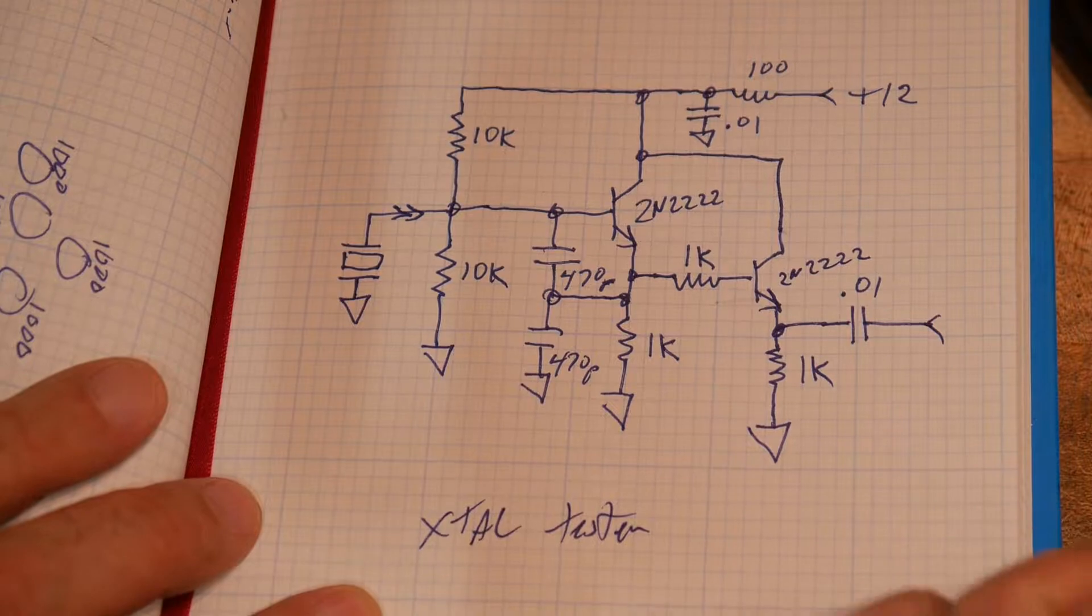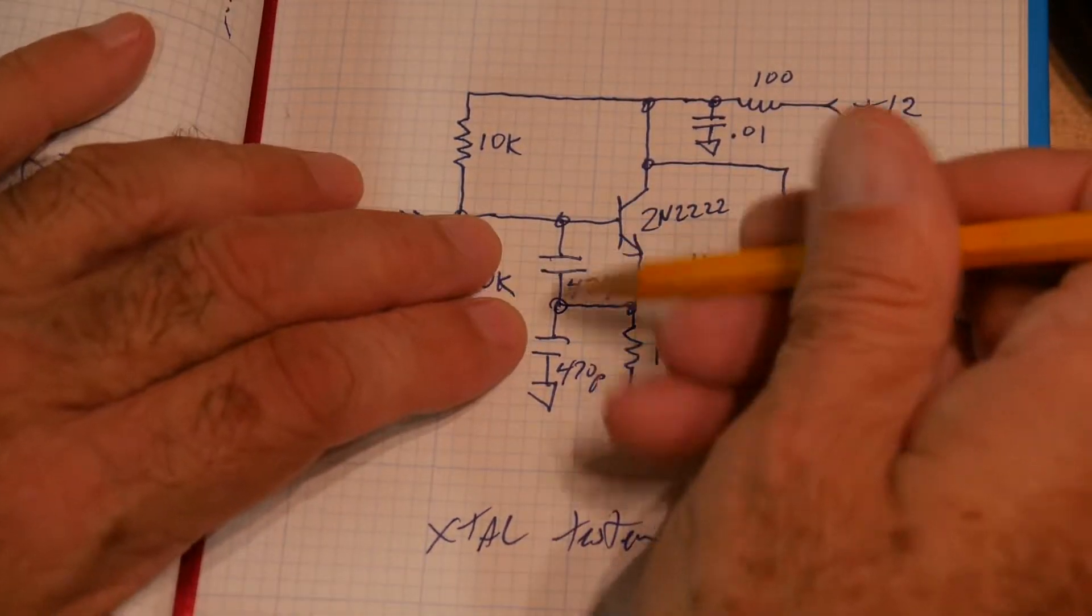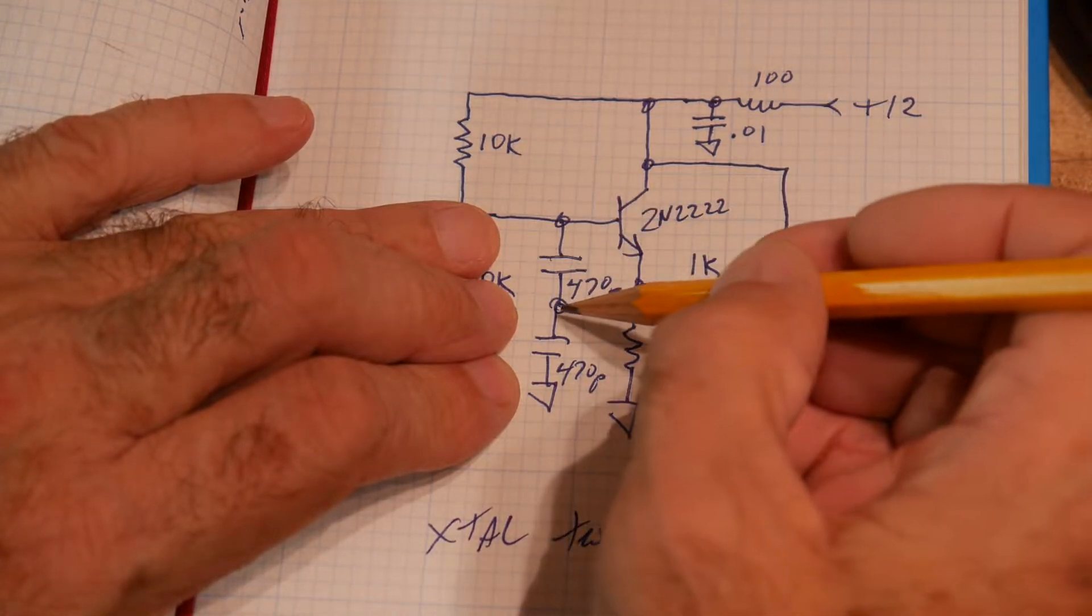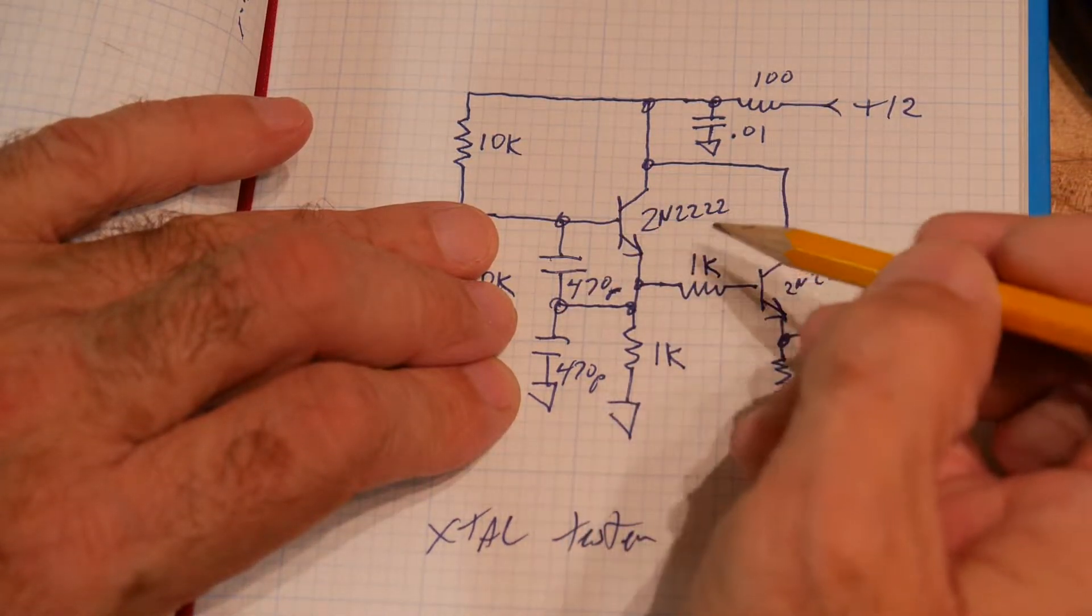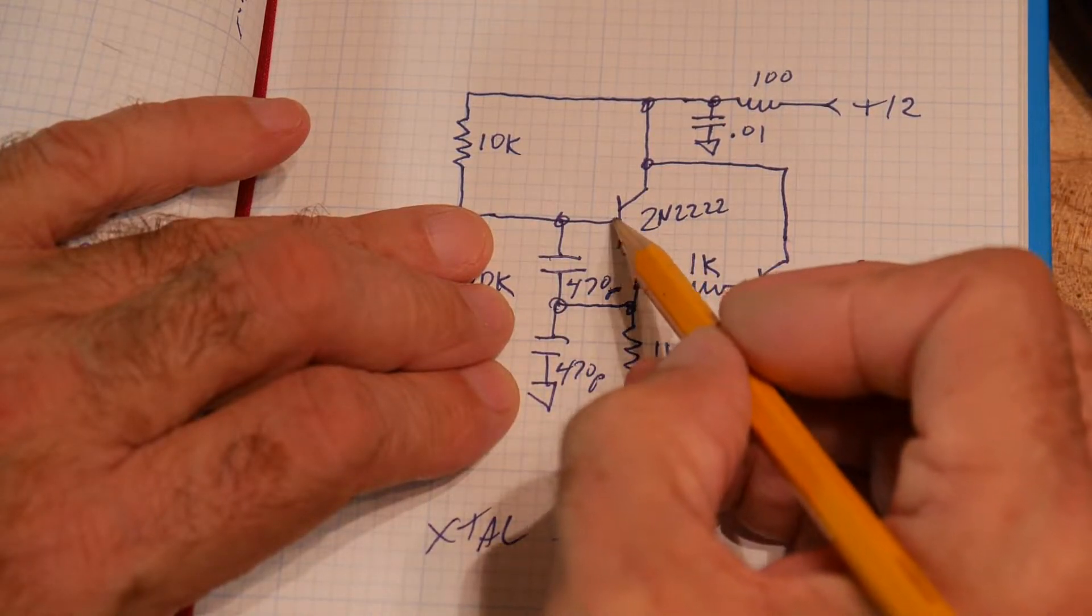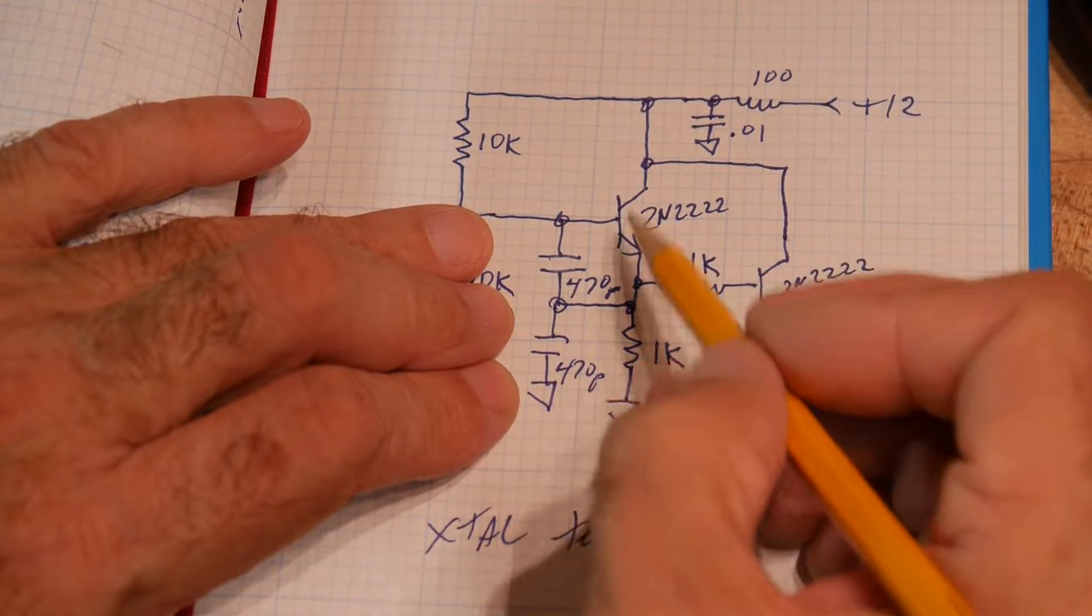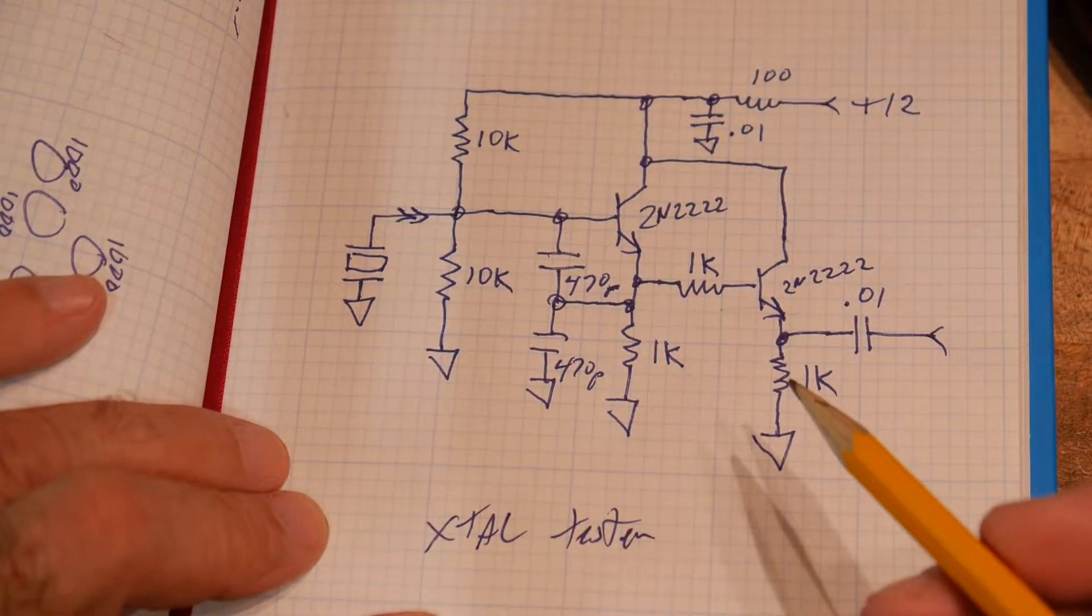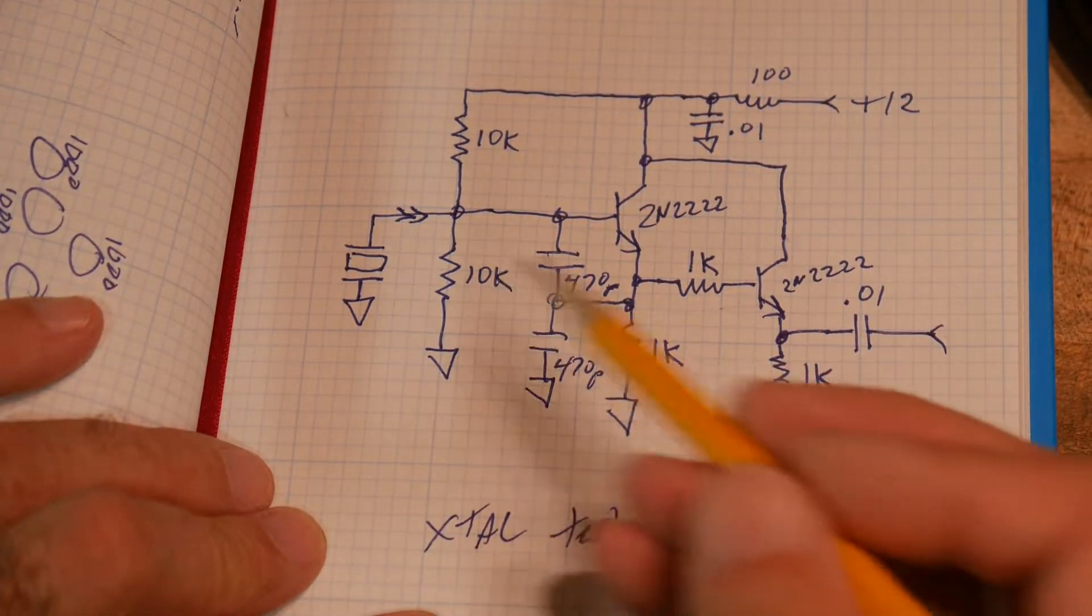And then this is the Colpitts oscillator. One of the easy ways to see if it's a Colpitts or not is these two capacitors. There will always be two capacitors in this oscillator. So there's a feedback here from the emitter back to the base, and then one down here to ground. So it's a very simple circuit. It's very symmetric.